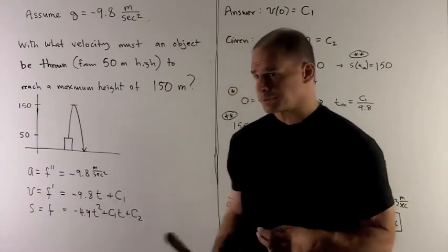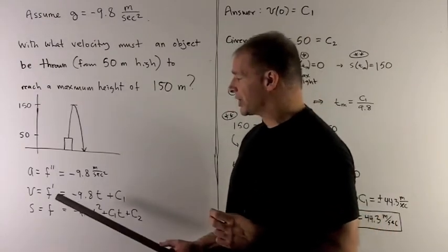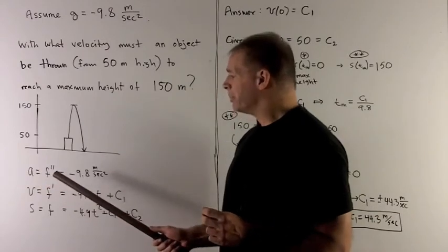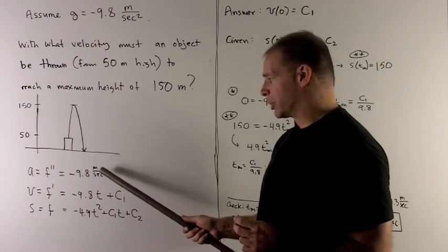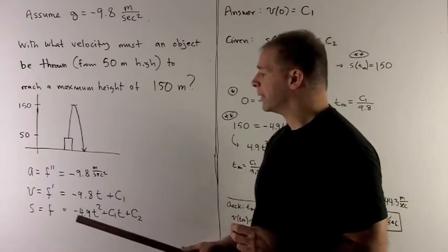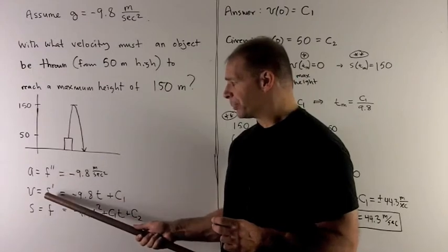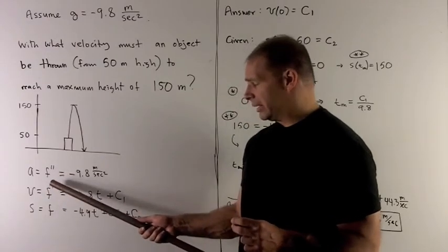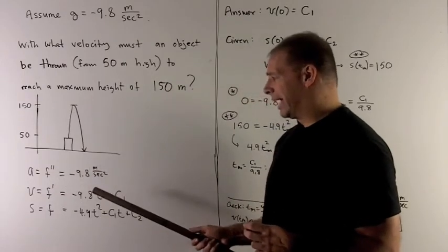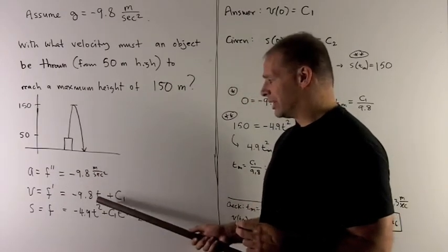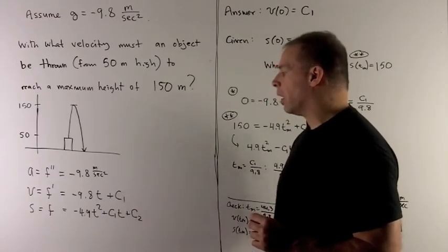One of the first things I can do is start writing out my general equations. The acceleration, which is the second derivative, is equal to -9.8 m/s² as given. My velocity, which is the antiderivative of the acceleration, is f'. Take the antiderivative of -9.8, that's a constant, so I just add in a t because our variable's time, and then I add the constant c1.